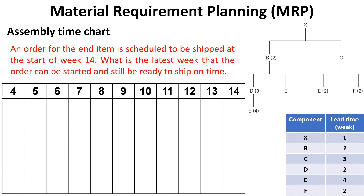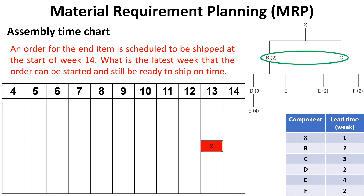Because the end item is scheduled to be shipped at the start of week 14, locate this week at the far right. This means that the assembly of the end item must be finished at the end of week 13 to be ready for shipping at the start of week 14. The lead time of the end product X is one week, so going backward from the start of week 14 by one week means that the assembly of the final item X must start at the beginning of week 13.